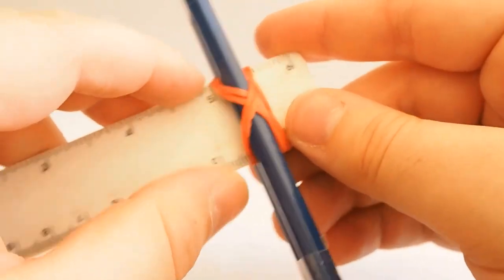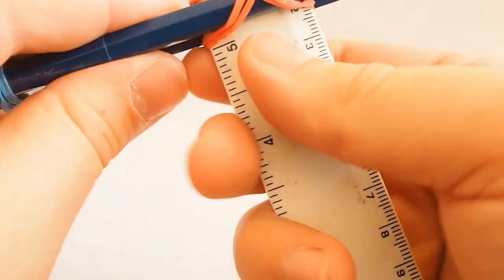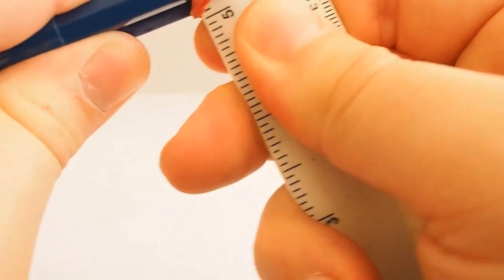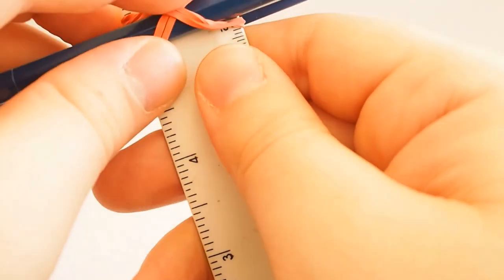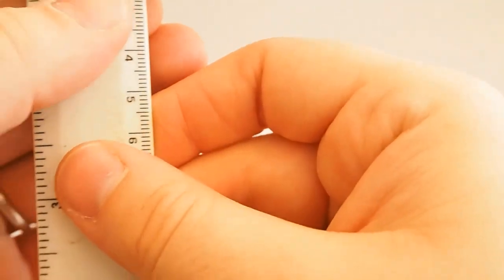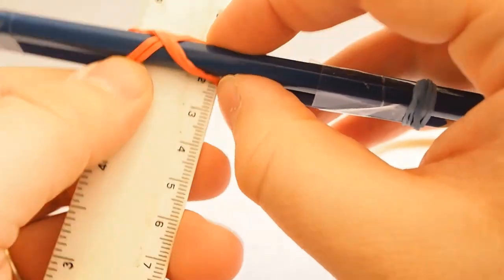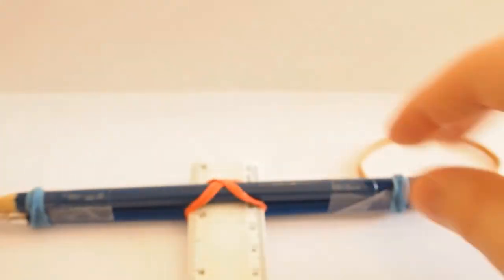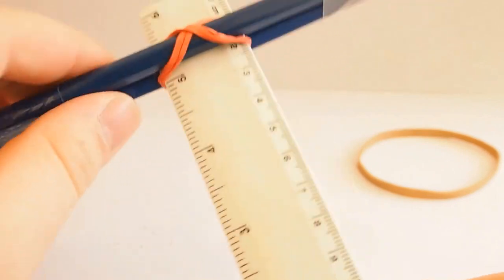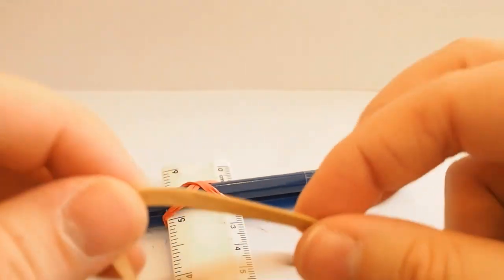That just tightly secures our pencils and our crossbar in place. Now the reason for trying to secure this so much is that we're going to be applying a force to this. Now, this looks like a very rudimentary crossbow. And I don't want to see anyone using it as a crossbow.